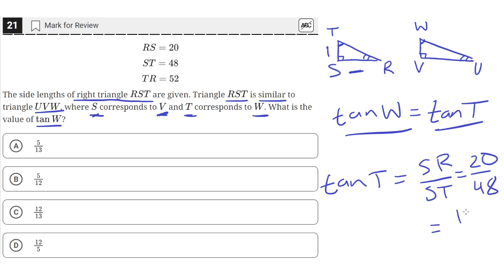Which we can simplify to 10 over 12, which can be further simplified to 5 over 6. Or actually, it's a typo. 20 over 48 simplifies to 10 over 24, which simplifies to 5 over 12. Which is answer choice B.